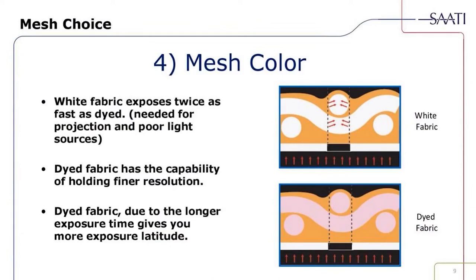Regarding color: we all know mesh to be either white or yellow, or in Saudia's manufacturing, sometimes orange. White fabric exposes twice as fast as dyed, which is needed for projection and poor light sources. Dyed fabric has the capability of holding finer resolution and, due to longer exposure times, gives you a greater latitude. White fabric tends to choke dots because the reflection of light in the white mesh scatters, whereas dyed fabric helps prevent choking out dots and gives you a cleaner, crisp edge definition.